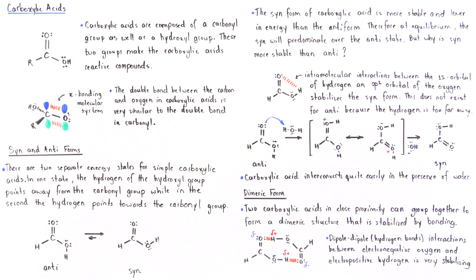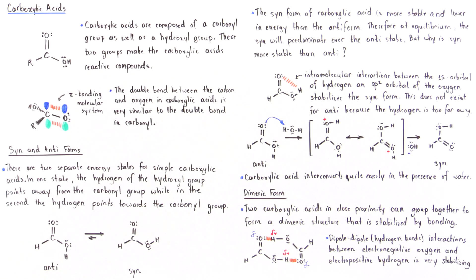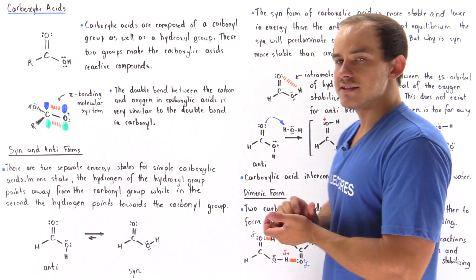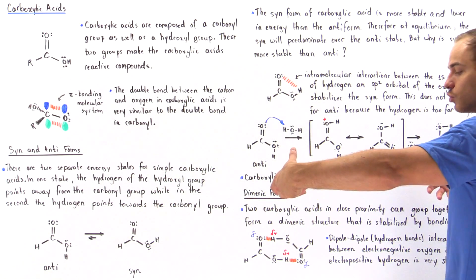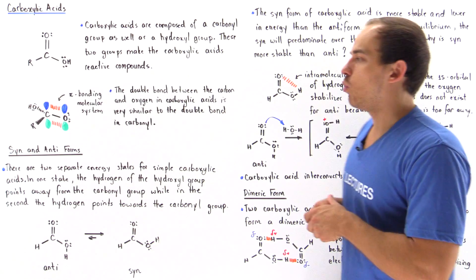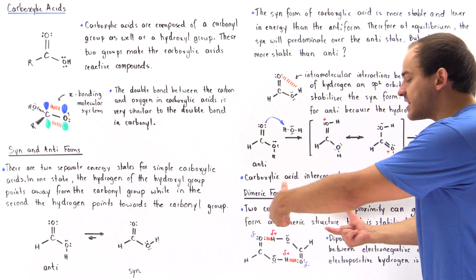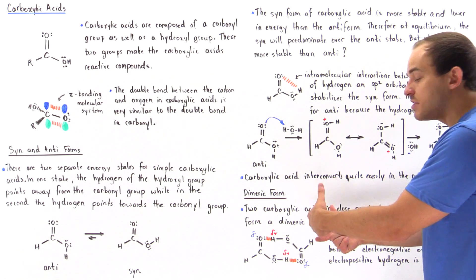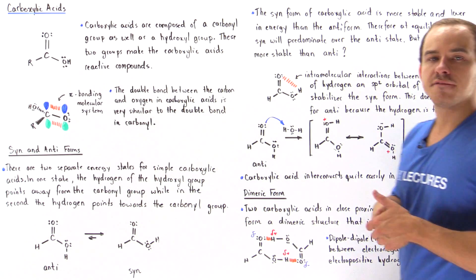Dipole-dipole or hydrogen bonds between the electronegative oxygen of one molecule and the electropositive hydrogen of the other carboxylic acid create a very stabilizing system. This lowers the energy of the entire system compared to the case where these two molecules are very far apart.